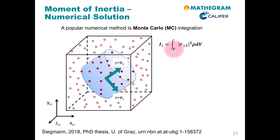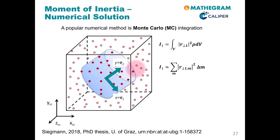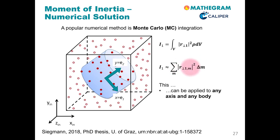So what we do with a Monte Carlo integration is we approximate this integral for the moment of inertia relative to an axis E1, by a summation over these tracer particles with mass delta m that are inside the non-spherical particle, multiplied by the normal distance to the axis to the power of 2. This is very easily applied to any axis and any body.